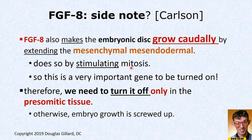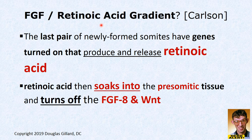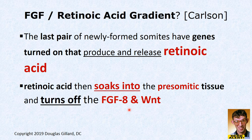A side note: FGF8 is really important in making the mesoderm extend longitudinally through mitosis and helps the embryo fold. To turn off FGF8, here's the story: the last pair of somites formed — the newly formed somites — have new genes turned on that release retinoic acid. The retinoic acid soaks into the adjacent presomitic tissue and turns off FGF8 and WNT, giving the green light to build a somite.